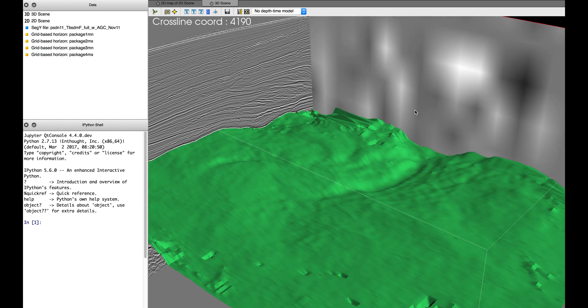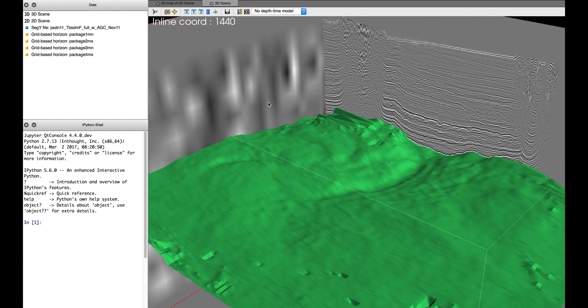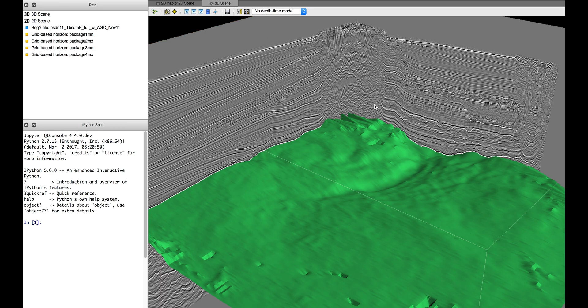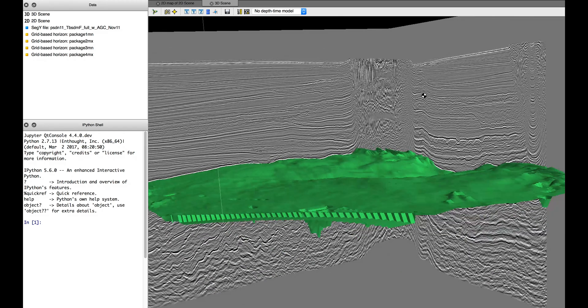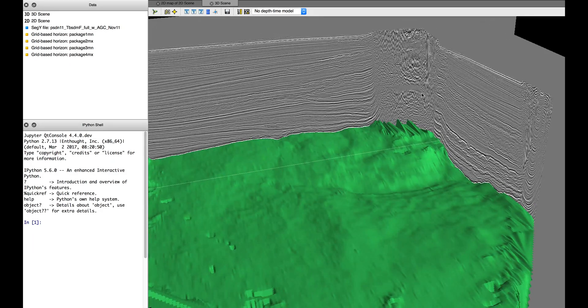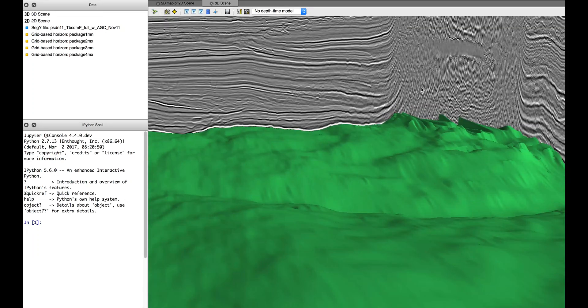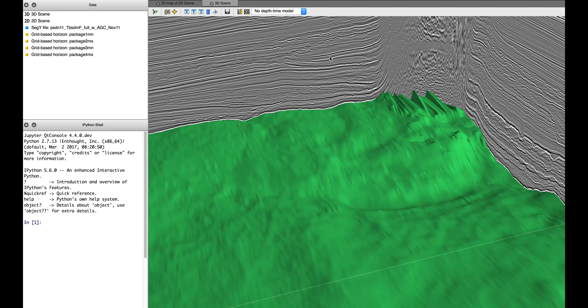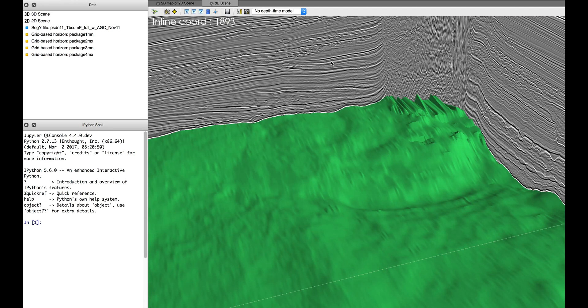So to visualize the results, what I'm going to do is basically we have an entire volume that's been automatically interpreted by the AI, and I'm going to show you the boundary between two of the sequences. In this case, it's the boundary between the green and the yellow, and I'm going to show you what the horizon would look like along that boundary.